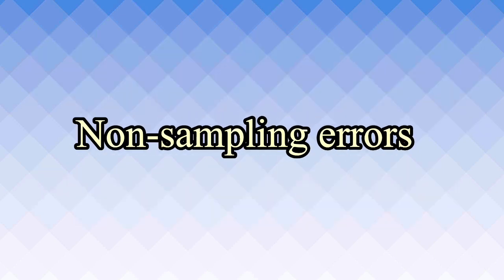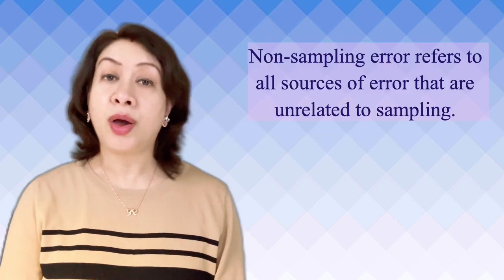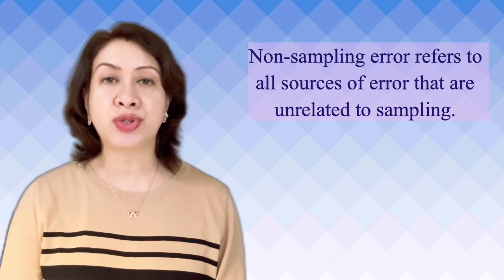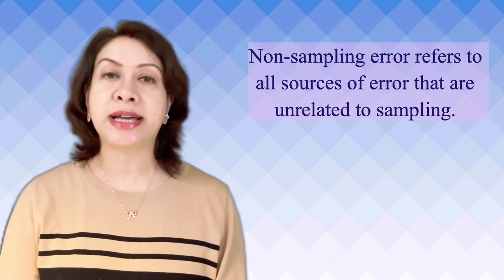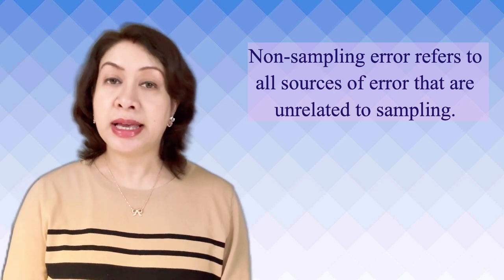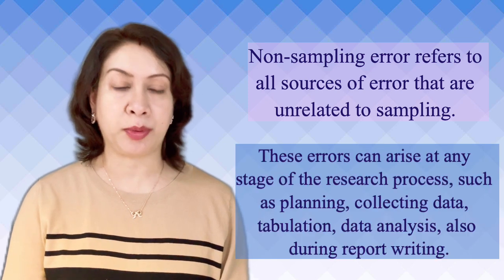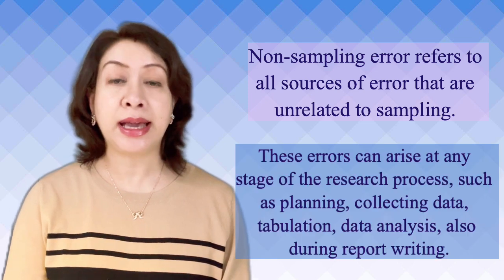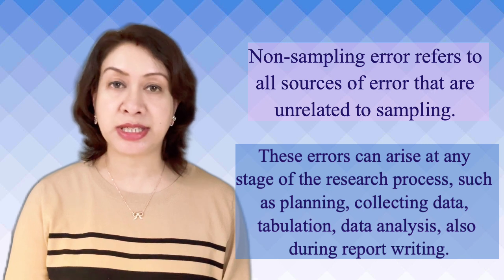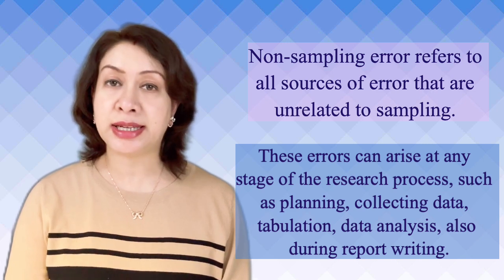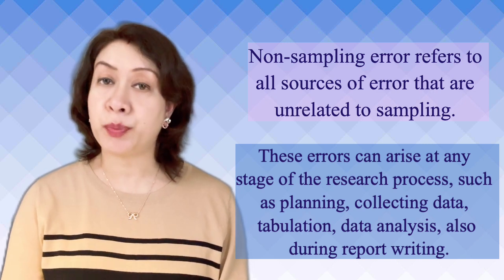There are other errors that can occur while conducting a survey. These are different from sampling error and are termed as non-sampling errors. Non-sampling errors refers to all sorts of errors that are unrelated to sampling. Such errors can arise at any stage of the research problem such as planning, collection of data, tabulation, data analysis and also during report writing.